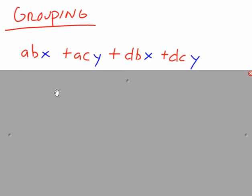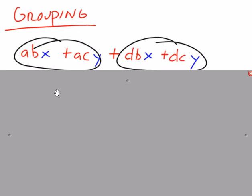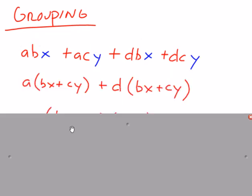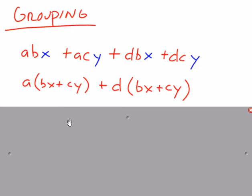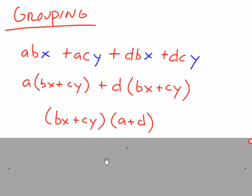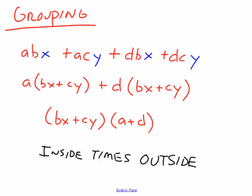So, grouping applies to four or more terms if you have an even amount of terms. So if I look at the first two, what do these first two terms have in common? They both have an a. If you look at the second group, what do they have in common? They both have a d. So, if I factor out an a from the first group and a d from the second group, now I look inside the parentheses. If the parentheses match, which they do, then that becomes one factor. And then the numbers that I factored out, which were a and d, that becomes another factor.